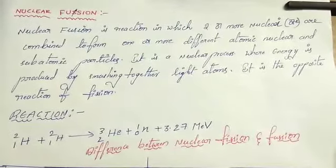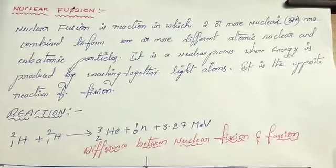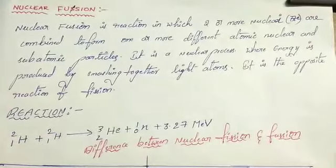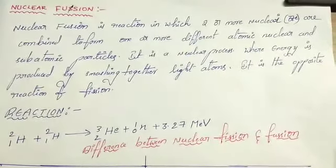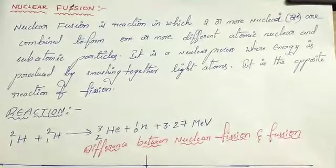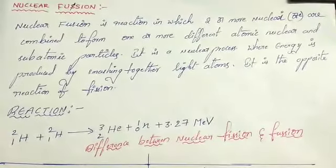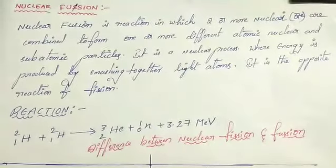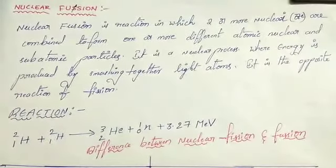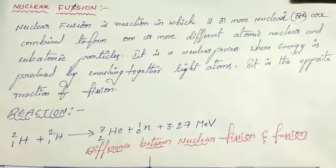In a fusion reactor, hydrogen atoms come together to form helium atoms, neutrons, and a vast amount of energy. It is the same type of reaction that powers hydrogen bombs and the sun. Fusion reactions are actually not chemical reactions — they are nuclear reactions. The basis of chemical reactions is the exchange of electrons, and the amount of energy generated is relatively small.